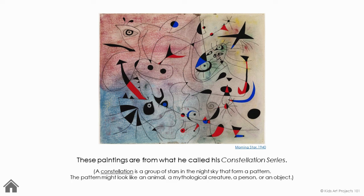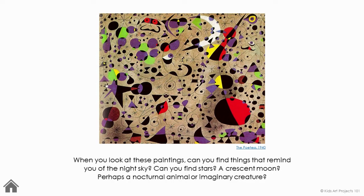These paintings are from what he called his Constellation series. A constellation is a group of stars in the night sky that form a pattern. The pattern might look like an animal, a mythological creature, a person, or an object. When you look at these paintings, can you find things that remind you of the night sky? Can you find stars? How about a crescent moon? Perhaps a nocturnal animal or an imaginary creature?